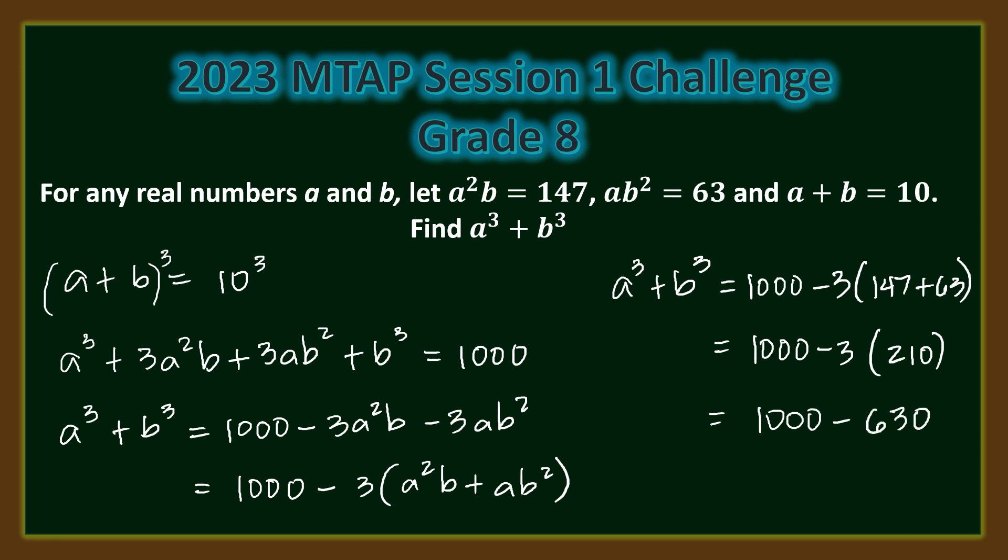Then a cubed plus b cubed is equal to 370.